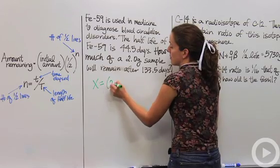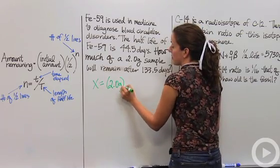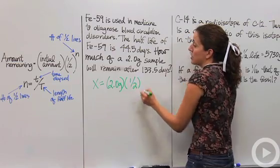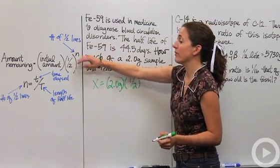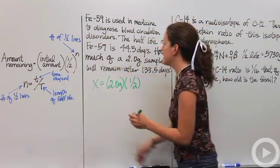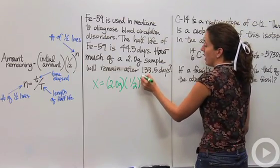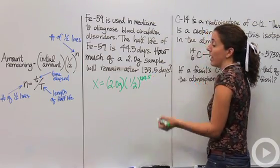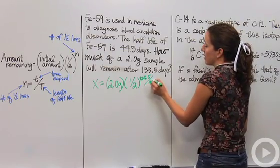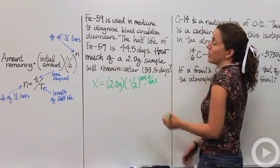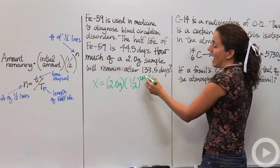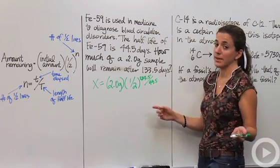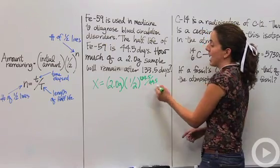Initially we had two grams. We're going to multiply by one half to the what power? We didn't tell the number of half-lives, we have to break it down to the time elapsed, which 133.5 days went by. The half-life was 44.5 days. Make sure when you're doing this, that the time elapsed and the time for the half-life, the units of time for these two are the same. So you can't have like seconds up top and days on the bottom.